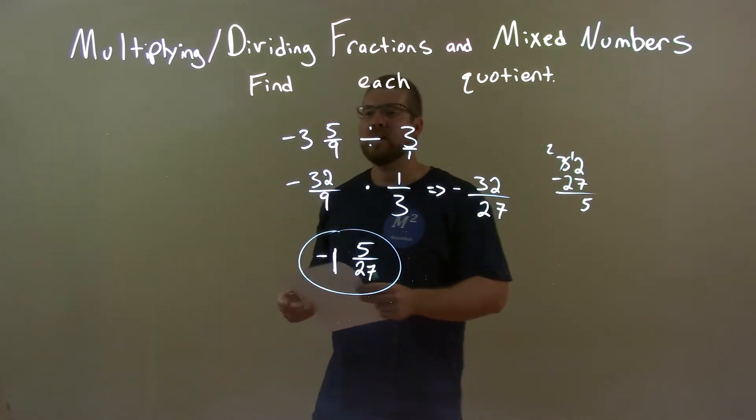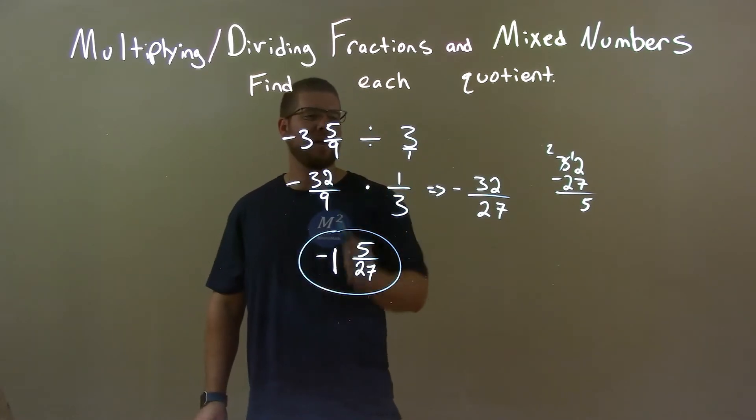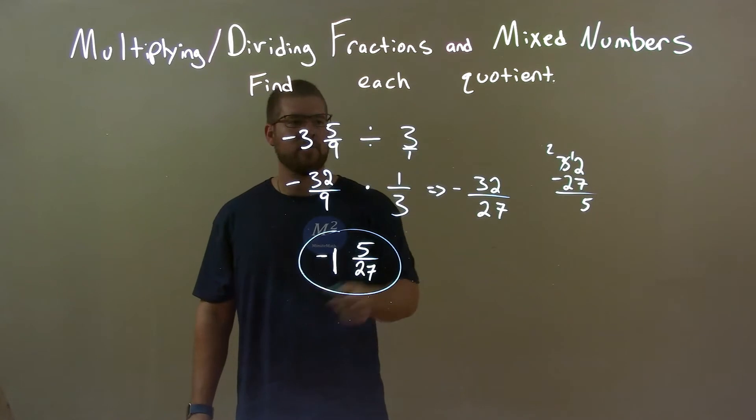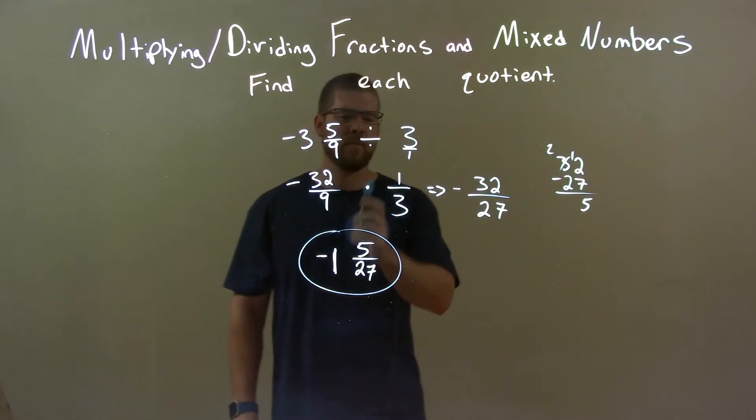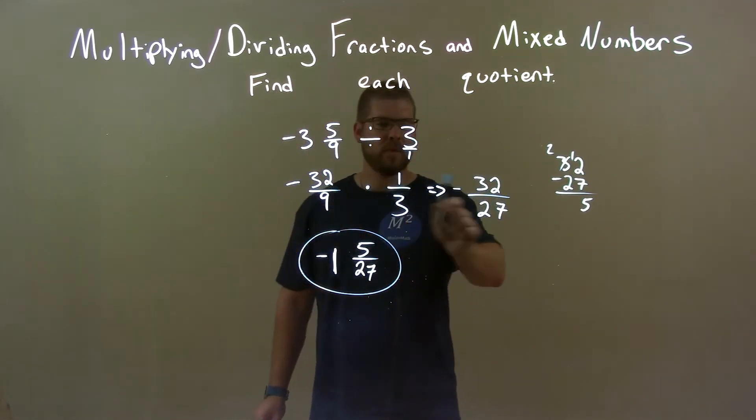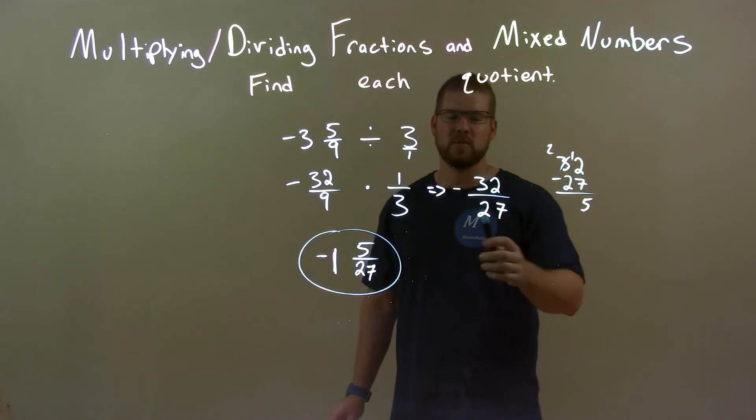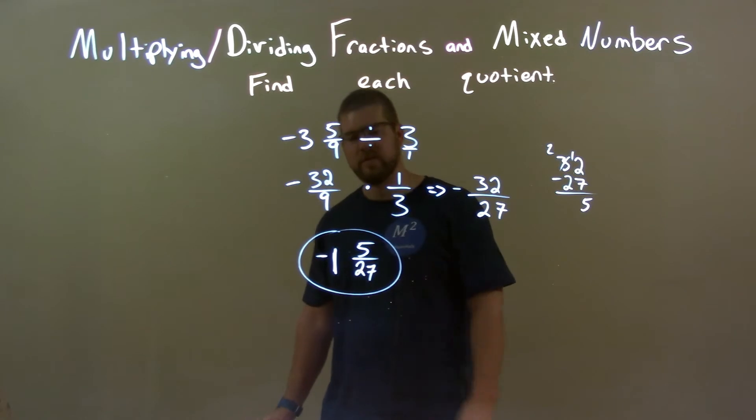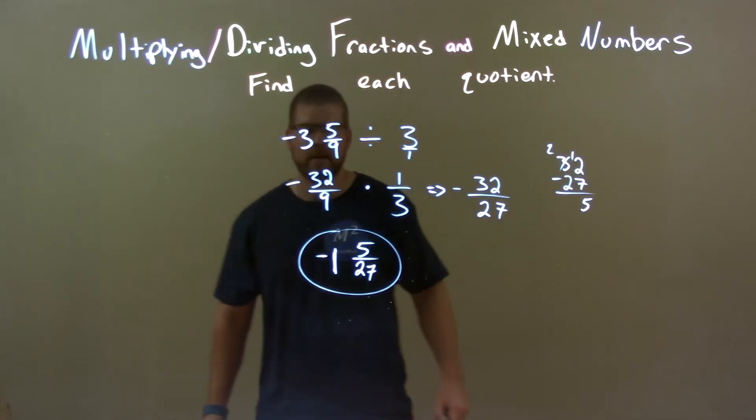Quick recap. We're given negative 3 and 5 ninths divided by 3. We converted this into an improper fraction, and instead of dividing by 3, multiplied that by 1 third. Multiplied across and got negative 32 over 27, which we converted to a proper fraction, which is negative 1 and 5 over 27, which is our final answer.